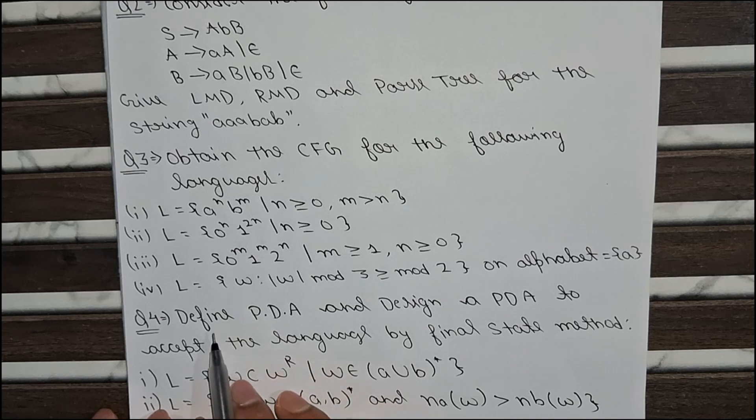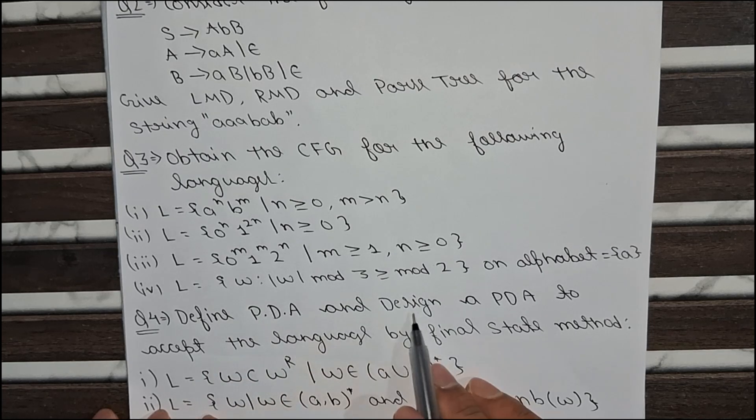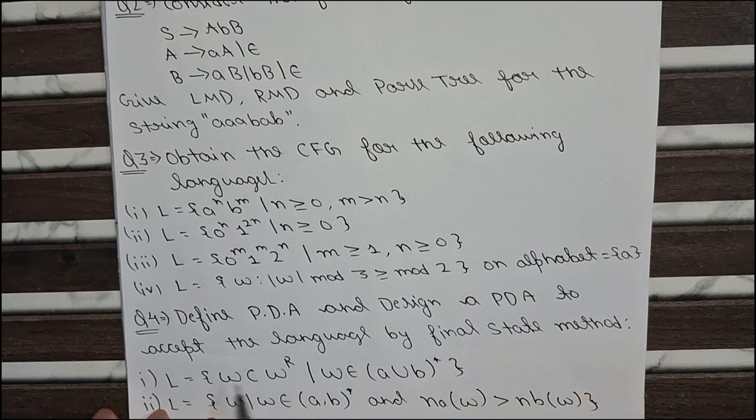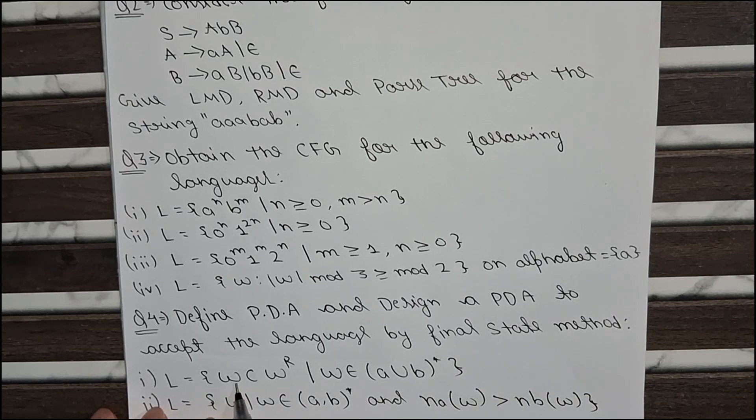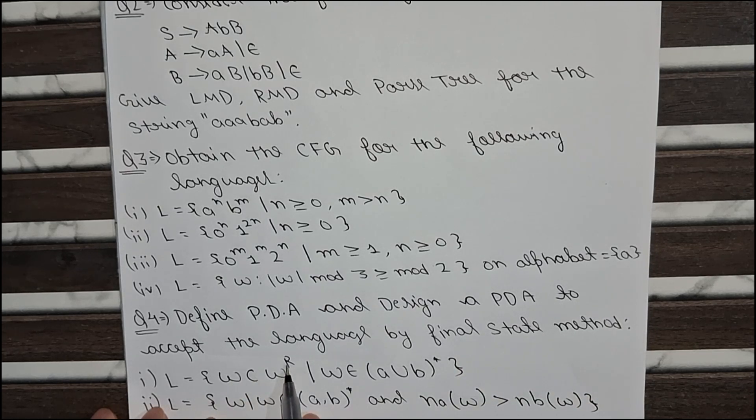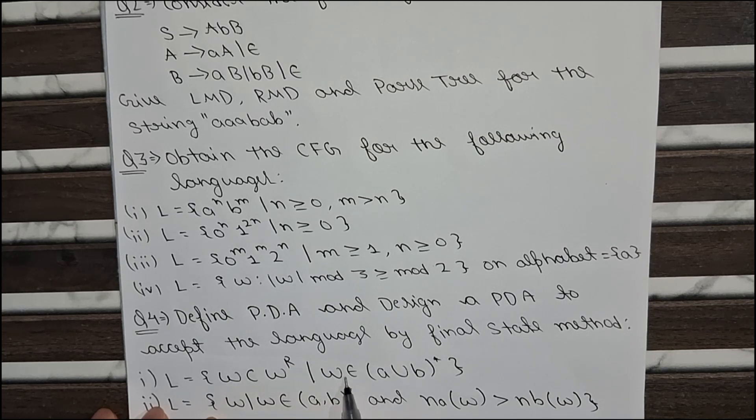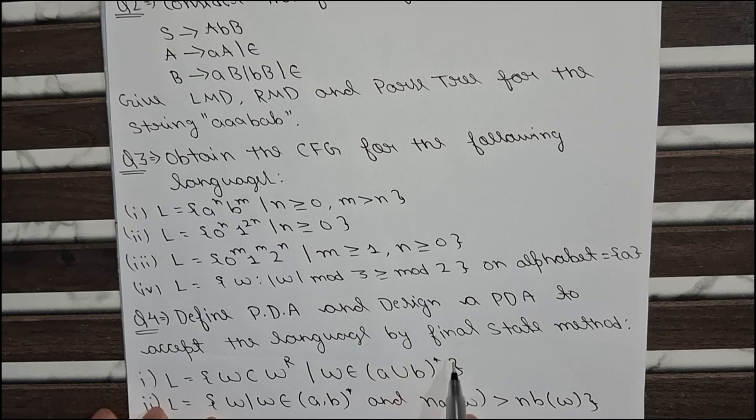The fourth question is define pushdown automata and design a PDA to accept the language by final state method. The language given here is W C W to the power R where W to the power R is a reverse of W, where W belongs to A union B to the whole asterisk.